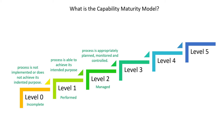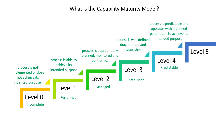Further along, the process is managed — appropriately planned, monitored, and controlled. Then the process is established: well defined, well documented, and well established. Next, the process is predictable and operates within defined parameters to achieve its intended purpose. Finally, the process is being optimized — continuously improving to meet its intended purpose and projected goals. Each level improves upon the previous one; this is what the Capability Maturity Model assumes.